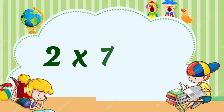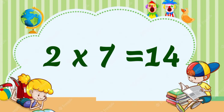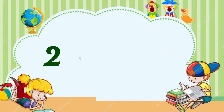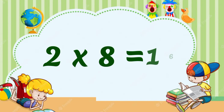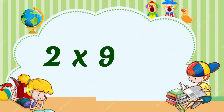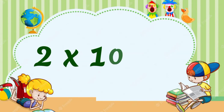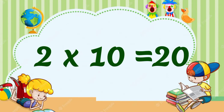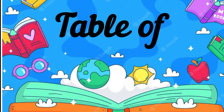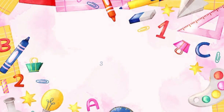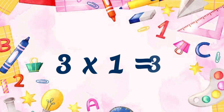2 7's are 14, 2 8's are 16, 2 9's are 18, 2 10's are 20. Table of 3: 3 1's are 3.